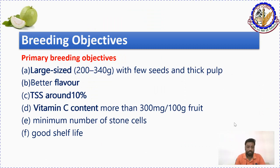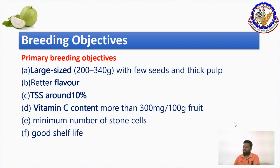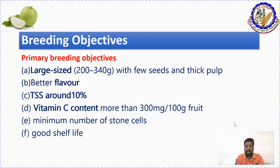In case of guava, the primary breeding objectives are: first, large fruit size — fruits should be approximately 200 to 300 grams. Large fruits have good market value. Nowadays large size guava are available in markets and people prefer to purchase them. Thai guava can be more than 400 to 500 grams. We also need thick pulp with few seeds for better flavor, and high TSS fruits are preferable.